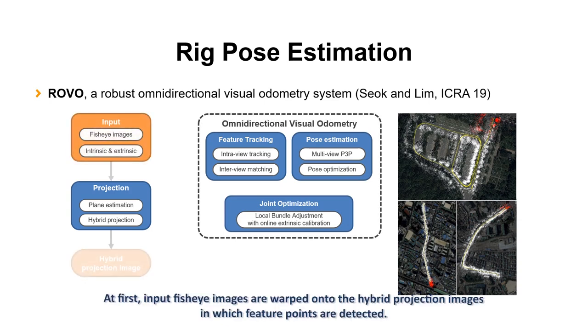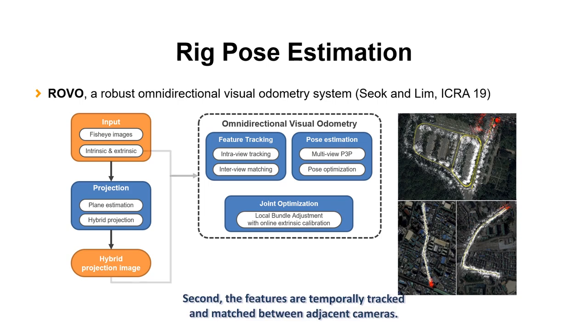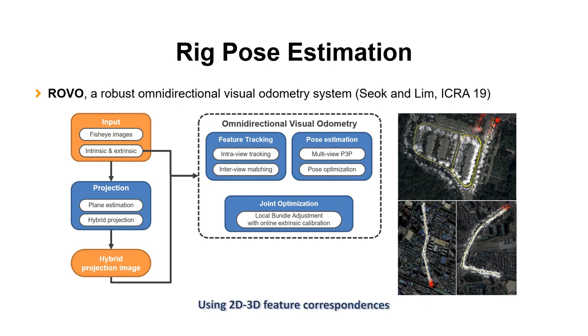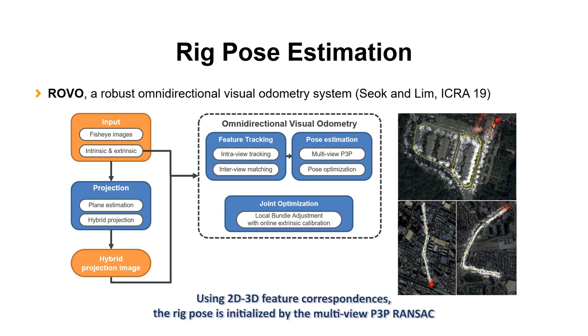At first, input fisheye images are warped onto the hybrid projection images in which feature points are detected. Second, the features are temporally tracked and matched between adjacent cameras. Using 2D-3D feature correspondences, the rig pose is initialized by the multi-view P3P-RANSAC and optimized by pose-only bundle adjustment.